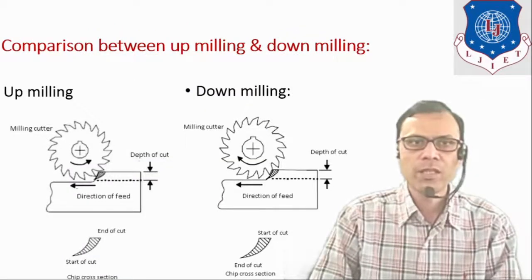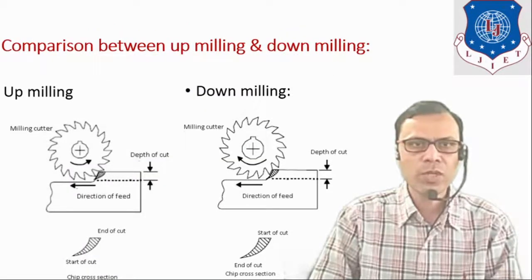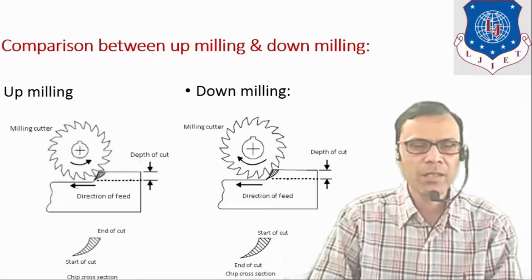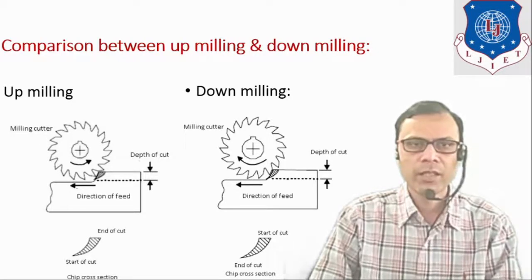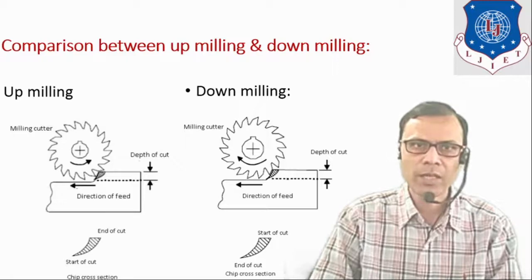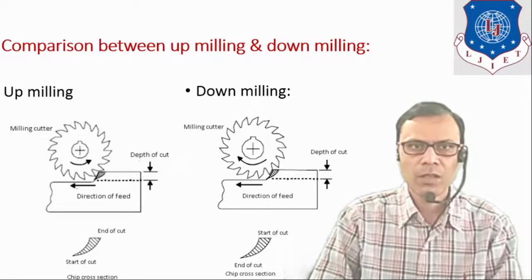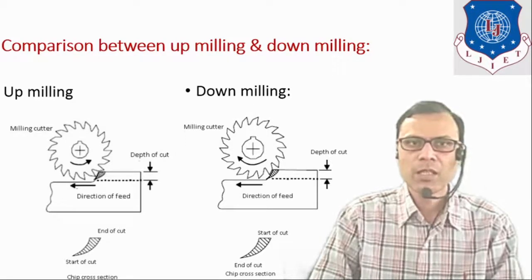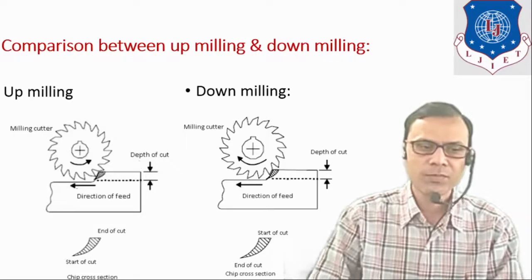Basically there are two types of milling methods or machining methods: that is up milling and down milling. Let's see the comparison between these two methods.